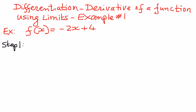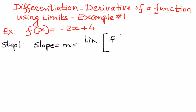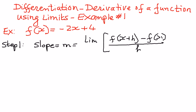What is the formula? The slope formula, or the derivative formula, is: m is equal to the limit of f of x plus h minus f of x, the whole thing divided by h, as h approaches 0. That is the formula.